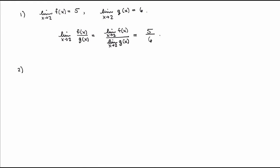We can also use limit laws to calculate limits of explicit functions. Suppose I want to calculate the limit as x goes to 1 of (2x + 1) / (x² + 2). This is a quotient of two polynomials, so I can use the quotient rule to rewrite it as the limit of the numerator divided by the limit of the denominator, as long as the limit downstairs is non-zero. Then I apply the sum rule both upstairs and downstairs.